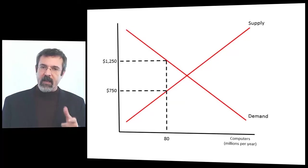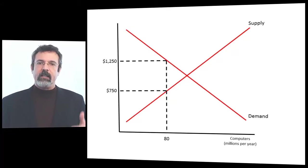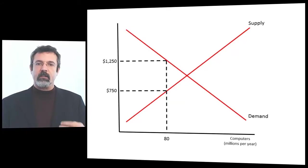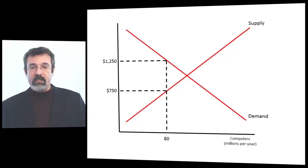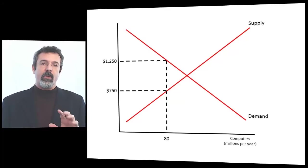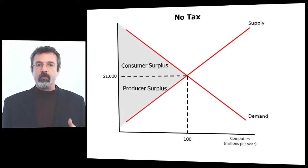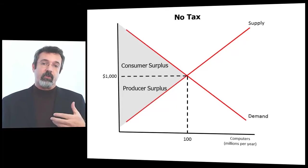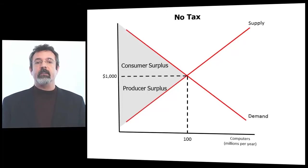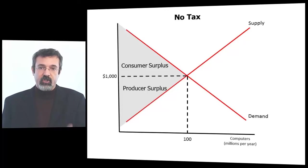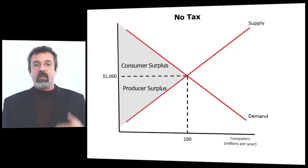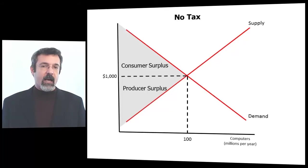To see the effect of the tax on the market, let's look at the consumer and producer surplus before the tax and after the tax. With no tax, the price of the computer is $1,000, and the consumer and producer surpluses are these areas. The market surplus — the total benefit to society from the exchange in this market — is the sum of these two surpluses.